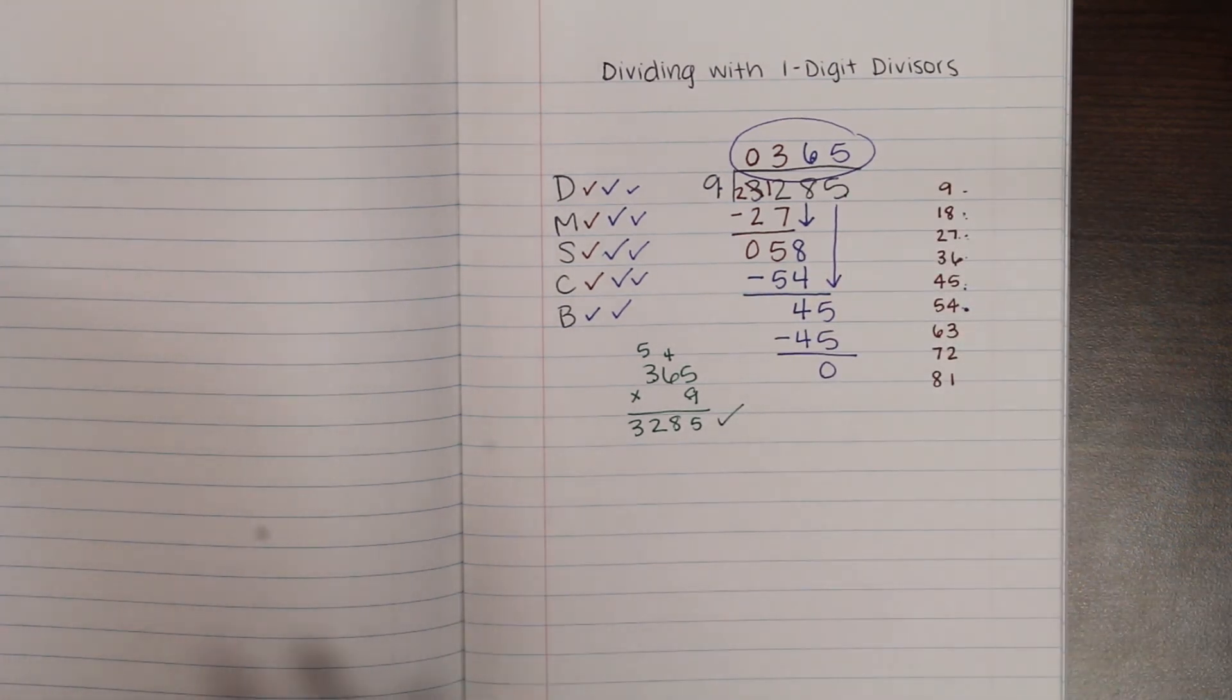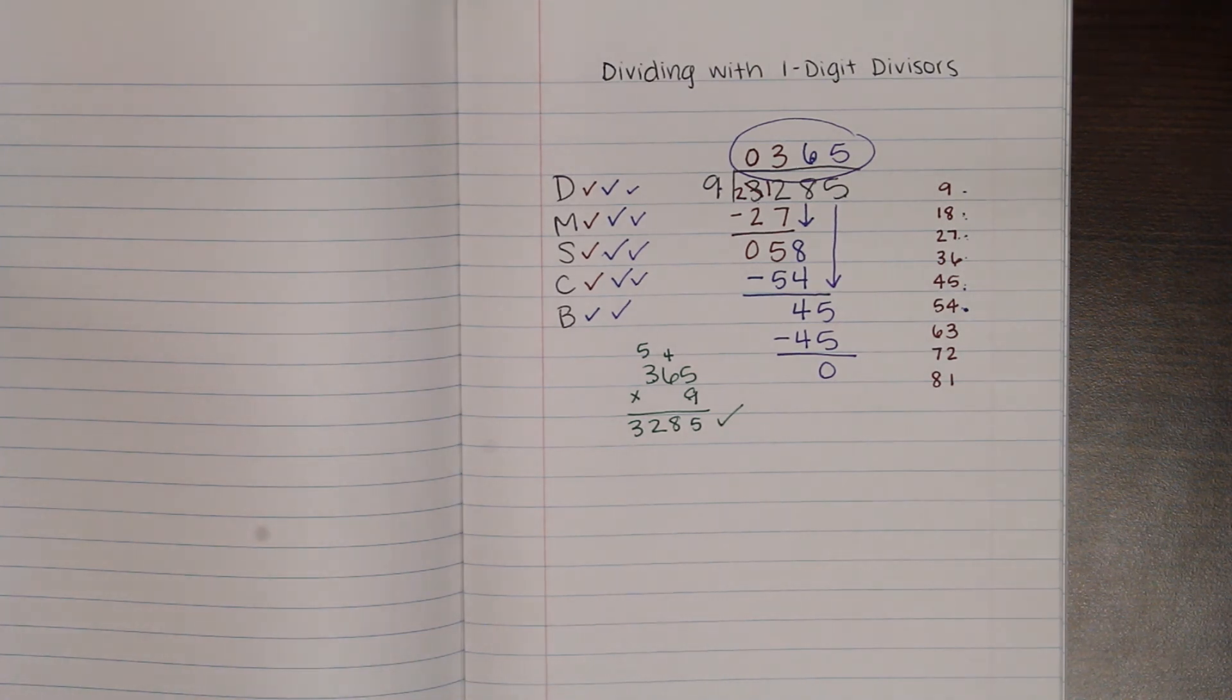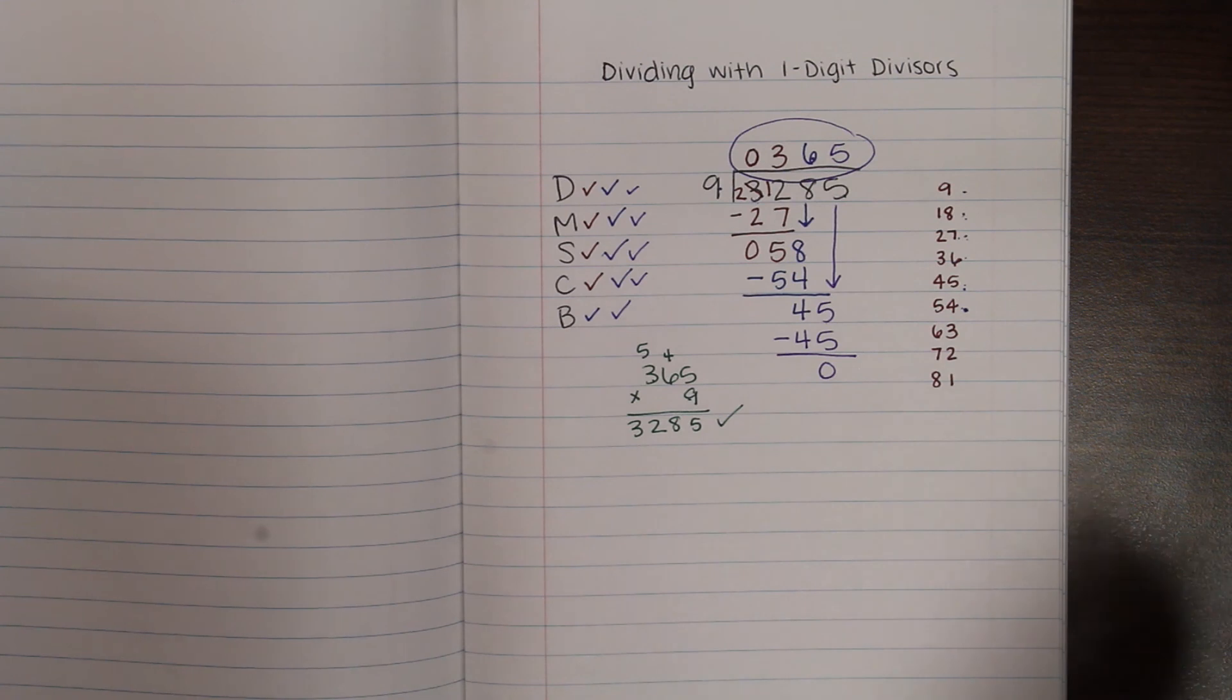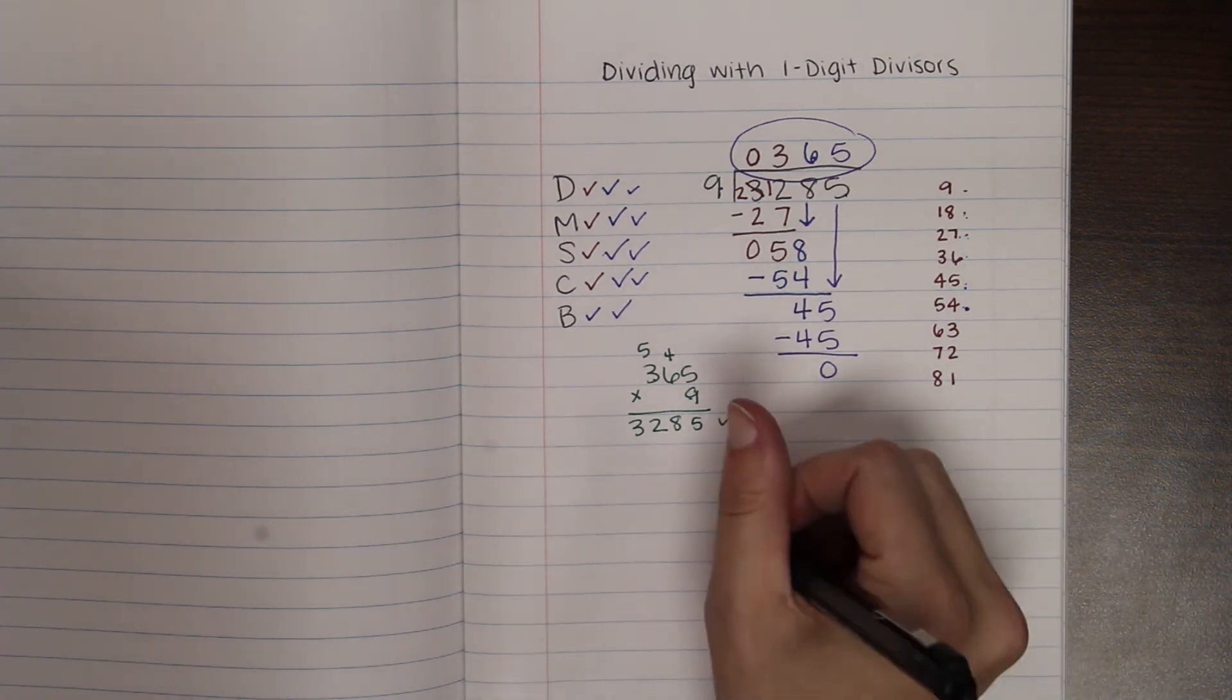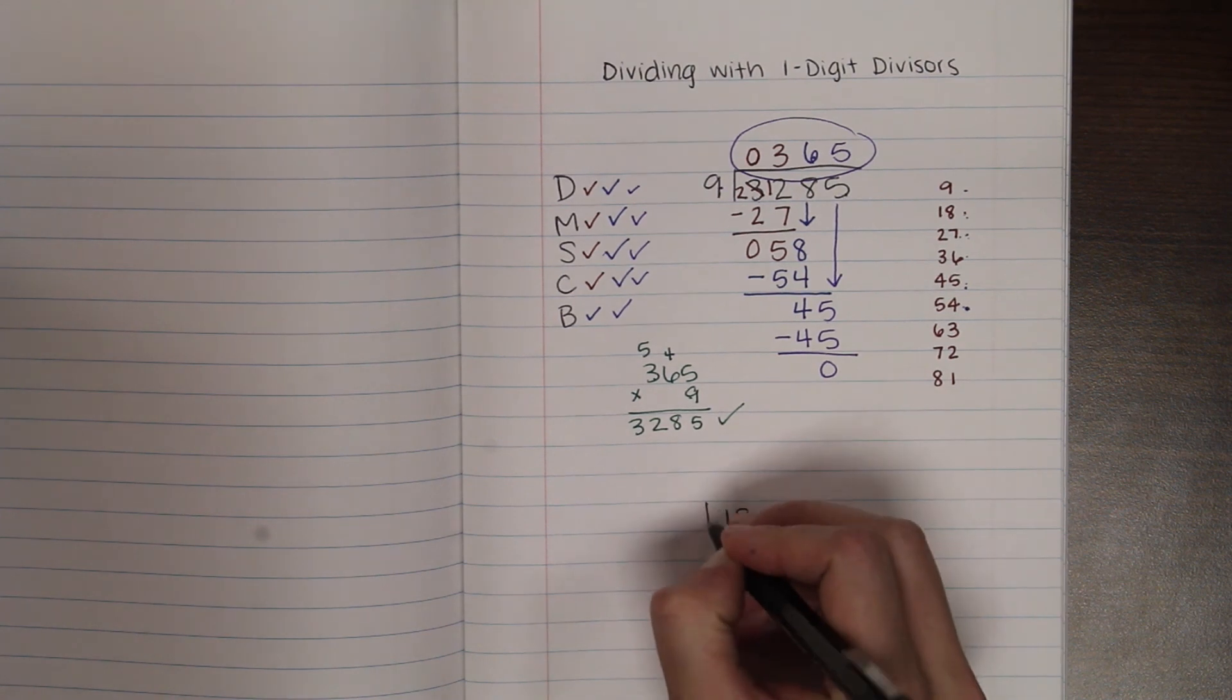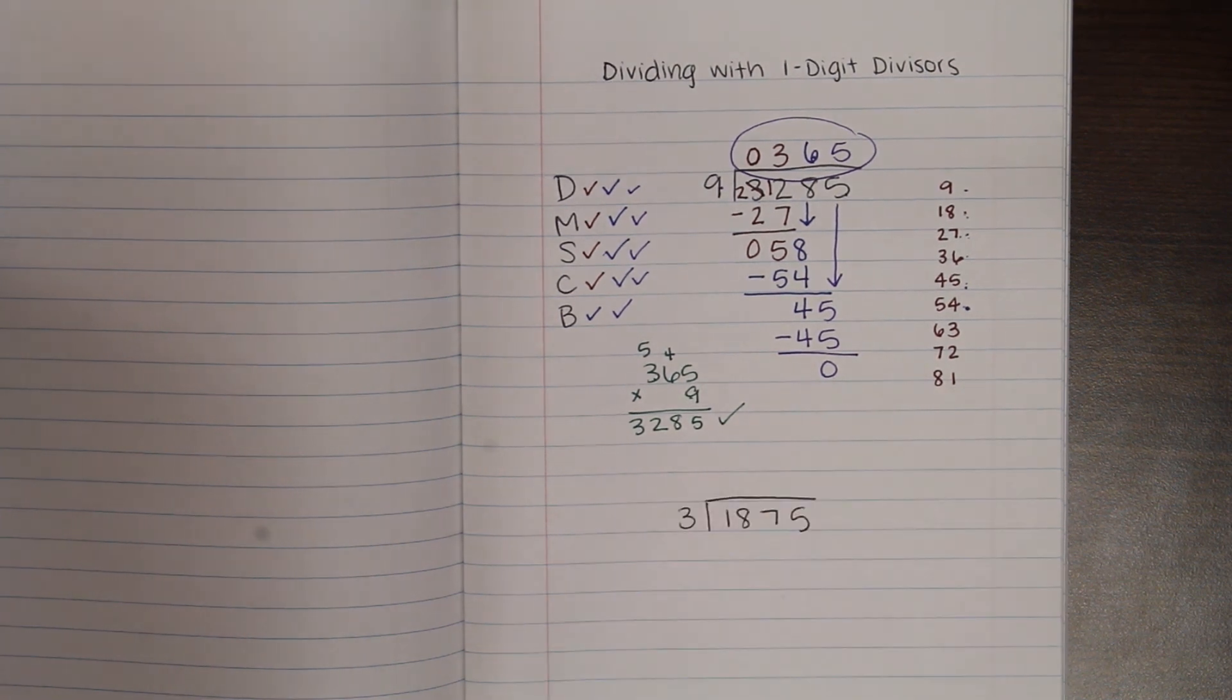All right, guys. I'm going to give you one problem to practice on your own. You can do this on the left side of your notebook, or you can just do it on a piece of scratch paper. Make sure that you, if you have a Google form to enter this on when you're done, then you'll have that. So the problem you're going to try on your own is 1,875 divided by 3. Good luck.